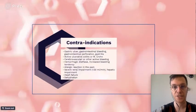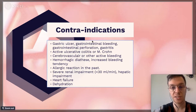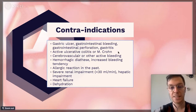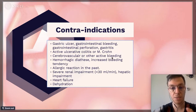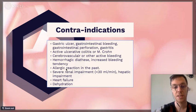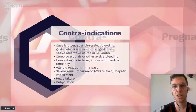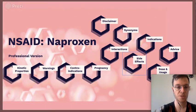Contraindications include: gastric ulcers, gastrointestinal bleedings, active ulcerative colitis or Crohn's disease, cerebrovascular accidents or bleedings, increased bleeding tendencies, allergic reactions to Naproxen or any other NSAID, severe renal or hepatic impairment, heart failure, and dehydration.